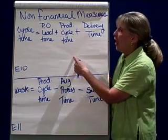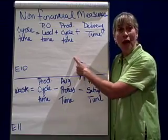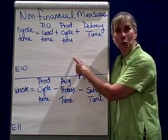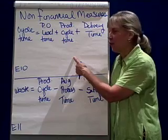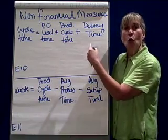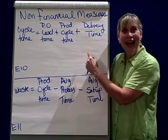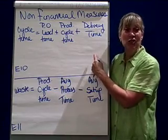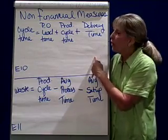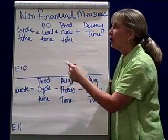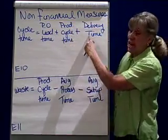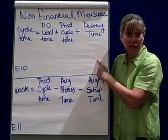The second type of time is the product cycle time — how long does it take to make the product or produce the service? And the third type of time is, once the product is completed, how long does it take to be shipped or delivered back to the customer? So cycle time includes the lead time, the production time, and the delivery time.